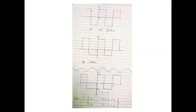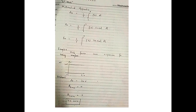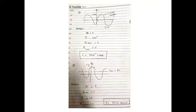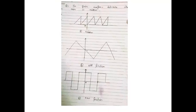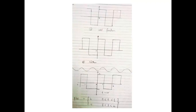Bismillahirrahmanirrahim. In this second portion of the week on electrical network analysis, we will continue the Fourier series. In the last lecture we studied the components of the Fourier series: the amplitudes of the DC portion and the sine and cosine series. We also did examples and studied even and odd functions. Today we will study how to write the function for any non-sinusoidal waveform.